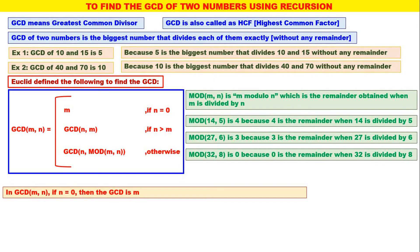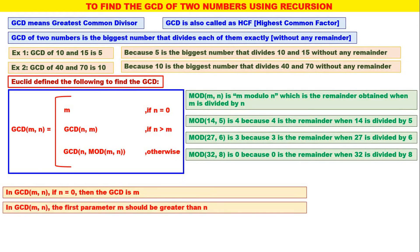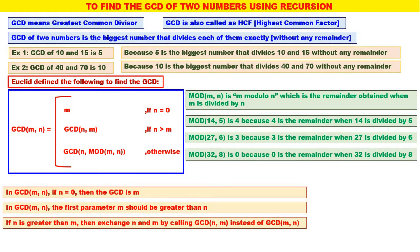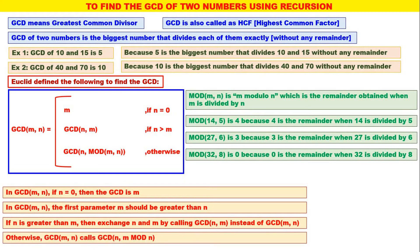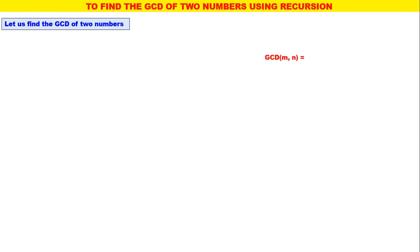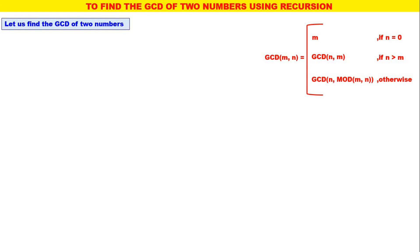In GCD of M, N: if N is equal to 0, then GCD is M. The first parameter M should be greater than N — very important. If N is greater than M, then exchange N and M by calling GCD of N, M instead of GCD of M, N, because the first parameter should be greater than the second parameter. Otherwise, GCD of M, N calls GCD of N, M mod N.